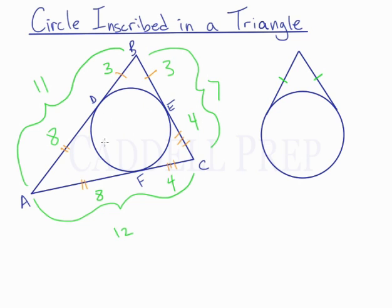So once again, we have this circle inscribed in a triangle. It's going to be tangent at 3 points. And these tangent lines are going to be congruent to each other. So these segments will be congruent, these two segments are congruent, and these two segments are congruent.